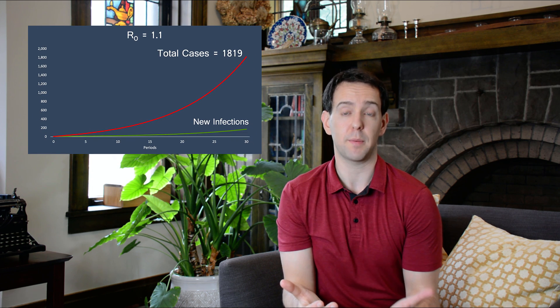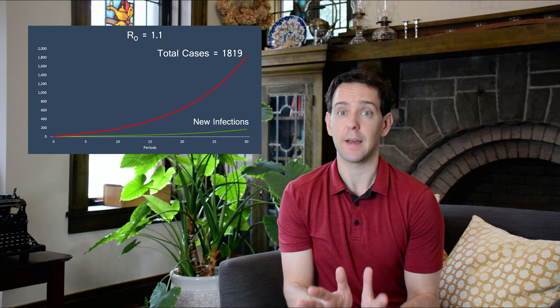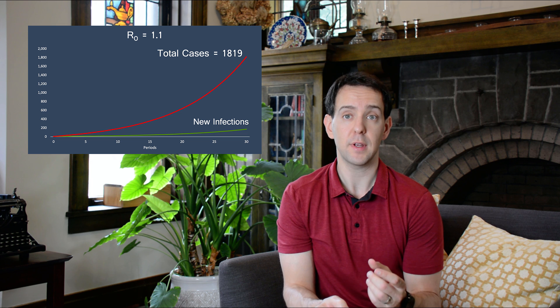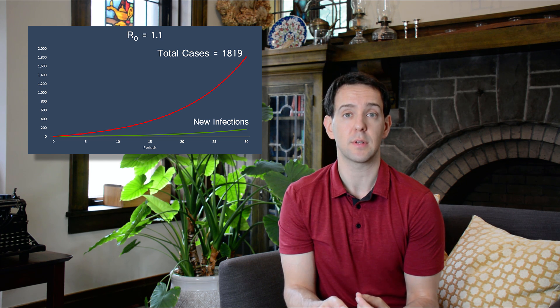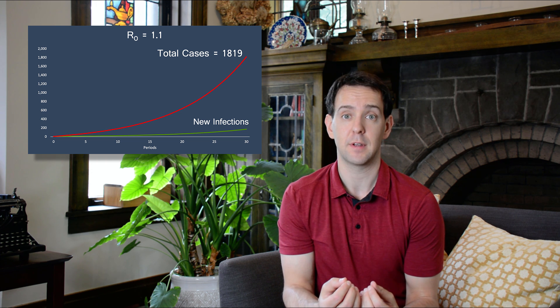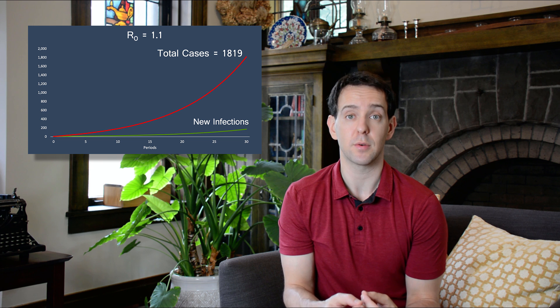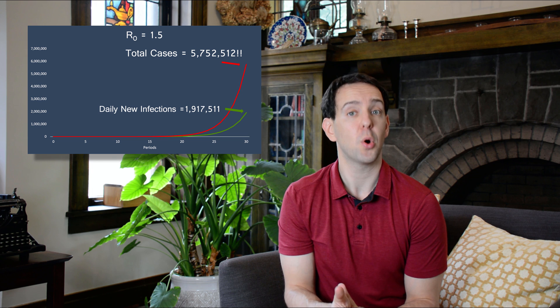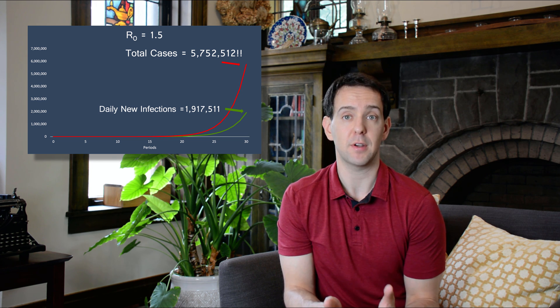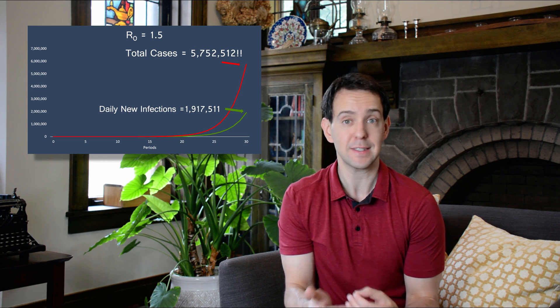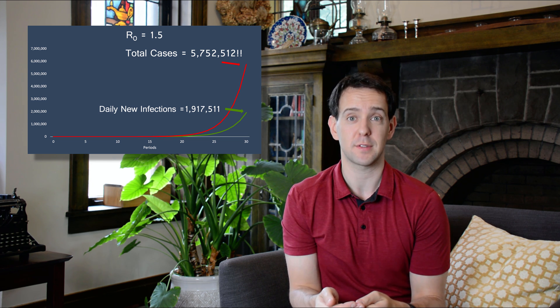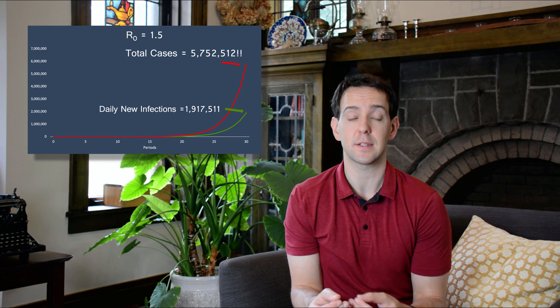What's really important is that we don't know how long a period is. If it takes months for someone to infect someone else, there's plenty of time for scientists to develop vaccines or treatments. But diseases like COVID-19 spread very quickly, and a period can be as short as a single day — meaning in one month, we can go from 10 infections to over 1,600. Looking at an R0 of 1.5 — seemingly not much higher — after 30 periods we see daily new infections of 1.9 million people and over 3.8 million total infections. Exponential growth is incredibly powerful and highly sensitive to small changes in growth rates.